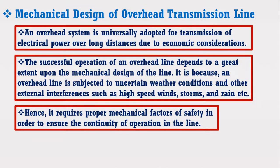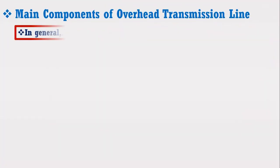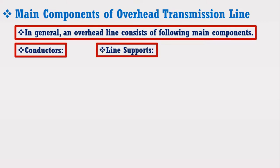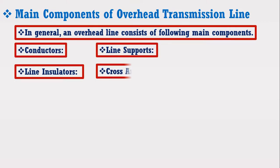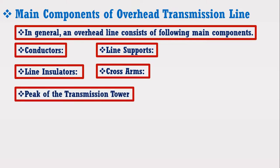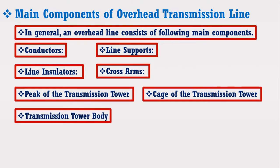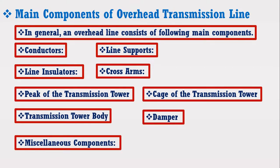In general, an overhead transmission line consists of the following main components: conductors, line supports, line insulators, cross arm, peak of the transmission tower, cage of the transmission tower, transmission tower body, damper, and other miscellaneous components. Now I am going to discuss briefly about each component of the transmission line. The detailed discussion on each component will be fully covered in the coming lectures.